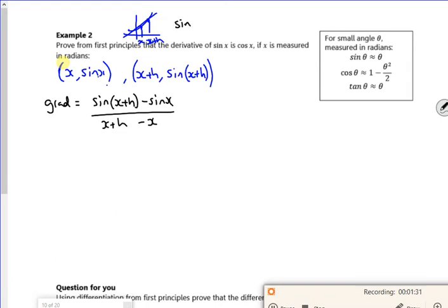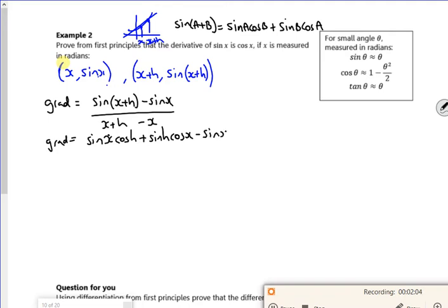Remember, sin of a plus b is sin a cos b plus sin b cos a. It might be that second bit is written as cos b. Right, so, gradient is sin of, so x plus h is going to be sin x cos h plus sin h cos x minus sin x all over h.